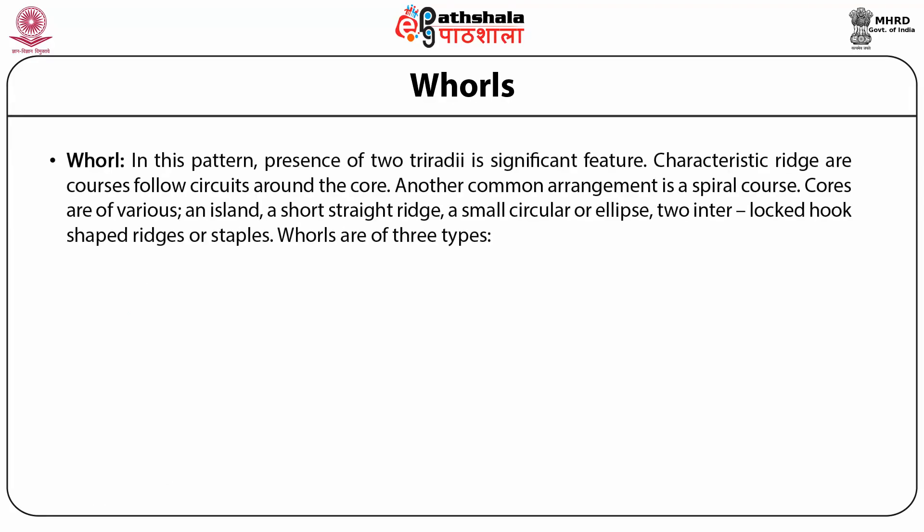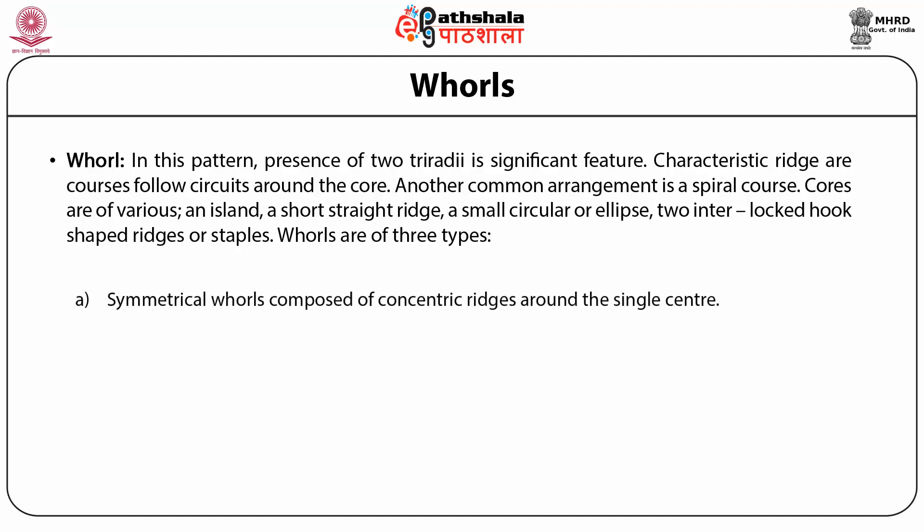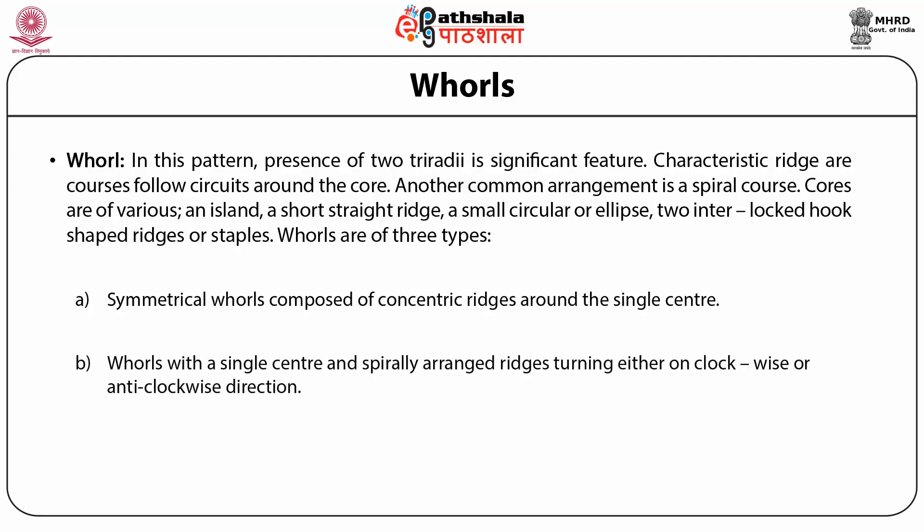Whorl: in this pattern, the presence of two tri-radii is a significant feature. Characteristic ridges follow circuits around the core; another common arrangement is a spiral course. Cores are of various forms: an island, a straight ridge, a small circular or ellipse, or two interlocked hook-shaped ridges or staples. Whorls are of three types: first, symmetrical whorls composed of concentric ridges around a single center; second, whorls with a single center and spirally arranged ridges turning either clockwise or anticlockwise; and third, double-loop type whorls with two cores. Whorls have two tri-radii.